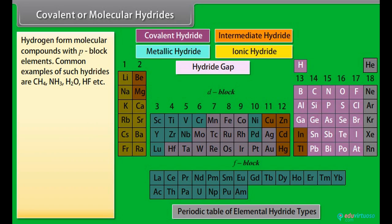Covalent or molecular hydrides: Hydrogen form molecular compounds with P-block elements. Common examples of such hydrides are CH4, NH3, H2O, HF, etc.